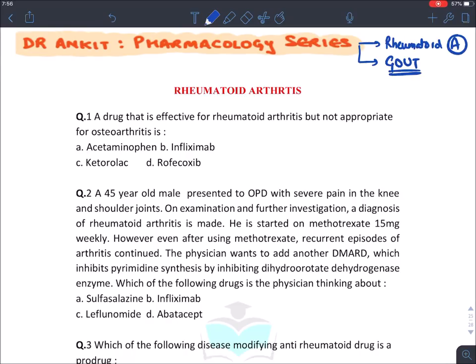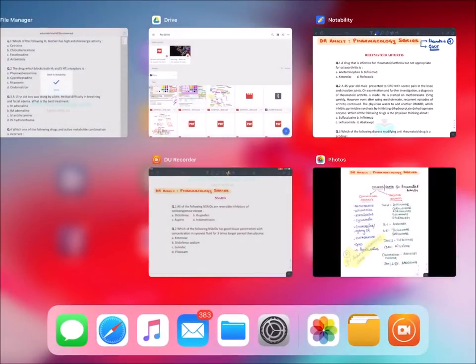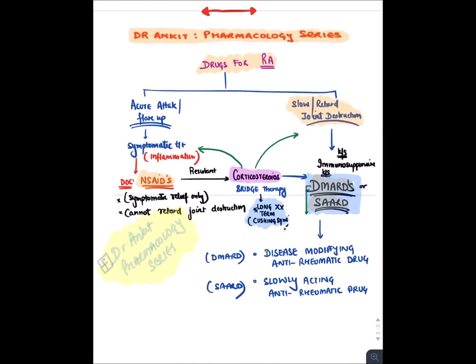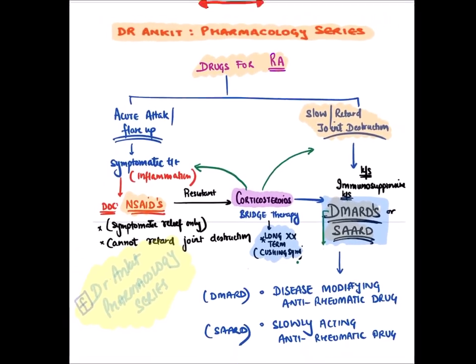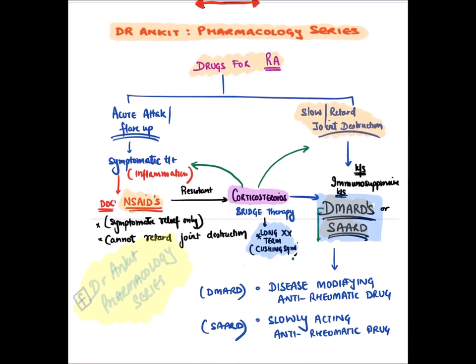Let's start with rheumatoid arthritis and discuss certain basics — which drug to be used in which cases. Rheumatoid arthritis is an autoimmune condition in which antibodies are formed against synovial joints. When a patient of rheumatoid arthritis comes in, the main treatment is first to control the acute attack or flare-up. For this we give symptomatic treatment — we control the inflammation by giving NSAIDs, which offer only symptomatic relief.